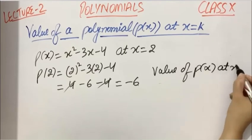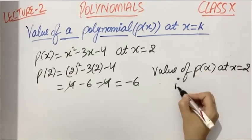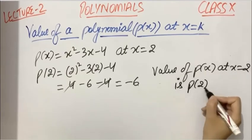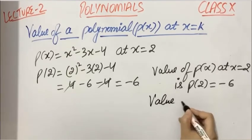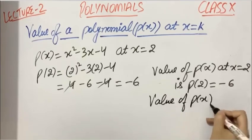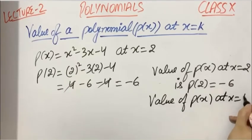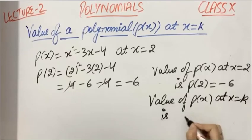Which means the value of polynomial P(x) at x equals 2 is P(2), which equals -6. That means the value of any polynomial P(x) at any real number k is denoted by P(k).